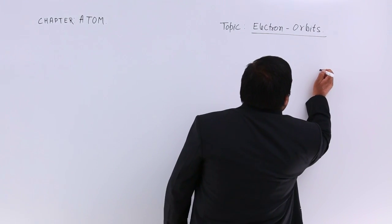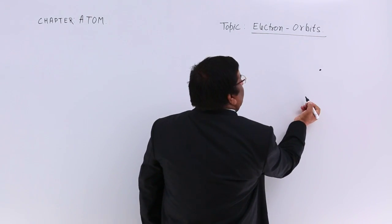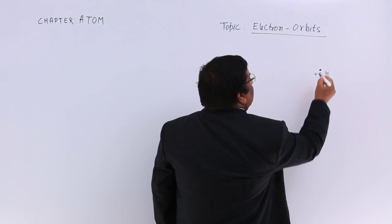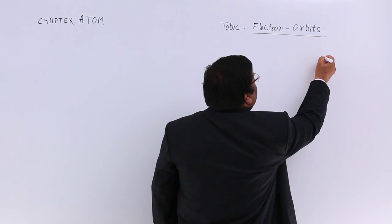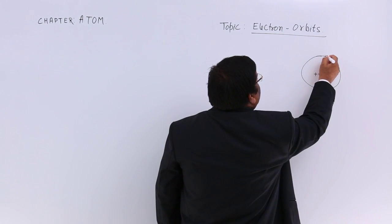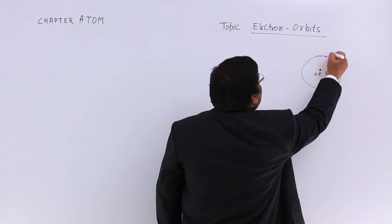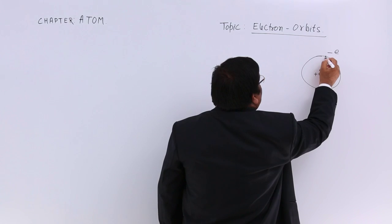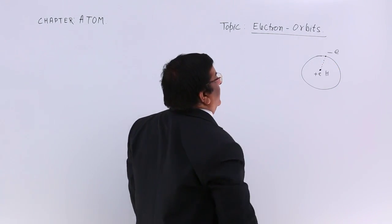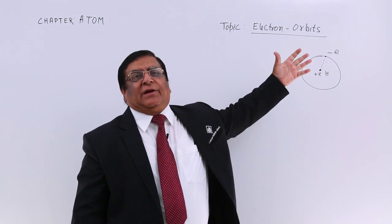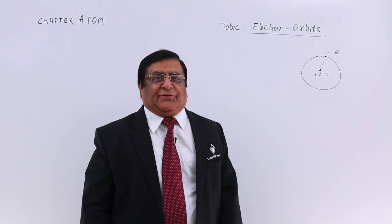He made the model of hydrogen: there is a plus E charge in the nucleus and there is one electron moving around it, and this electron has a charge of minus E. What is the energy of this system, or the energy of this electron?